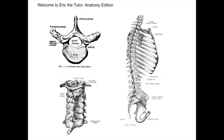What's up everybody? My name is Eric. Welcome to my channel, Eric the Tutor. Today we're going to be talking about the central nervous system and the peripheral nervous system. We're going to go through some bony anatomy, talk about the spinal cord, ganglia, some cranial nerves, some spinal nerves, and some clinical correlates such as Horner syndrome, shingles, and the polio virus. So let's go ahead and get started.